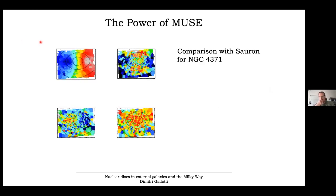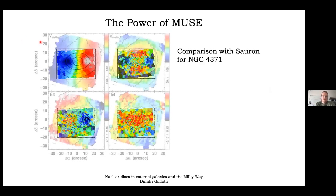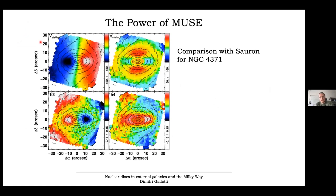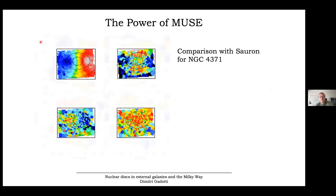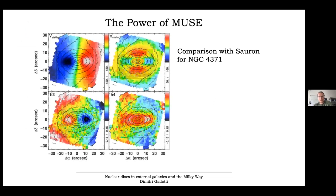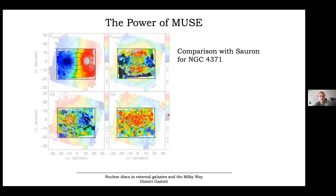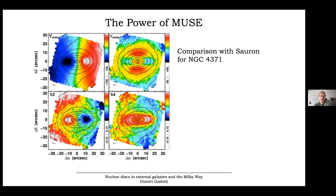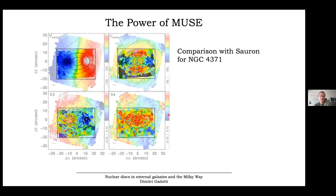I also want to show how MUSE is literally an eye-opener for these studies. Here are velocity, sigma, h3, and h4 maps for the same galaxy observed with MUSE compared with SAURON from several years earlier. When you have MUSE, it's like putting your glasses on — you can see the structure in the velocity field of the galaxy much more clearly. It's a real game changer for this kind of study.